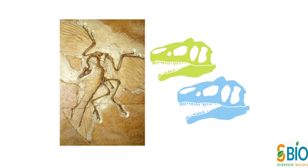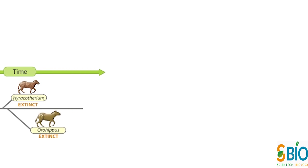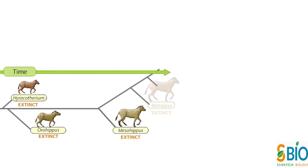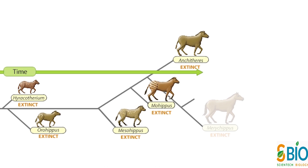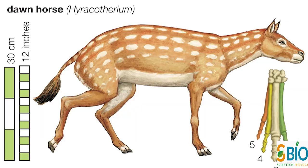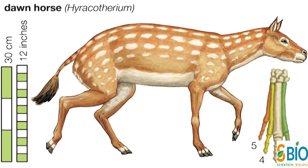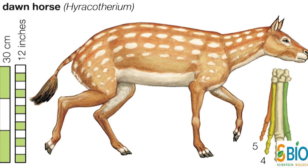Fossils से हम यह जान सकते हैं कि आज से लाखों साल पहले Organisms कैसे दिखते थे। Horse की Evolutionary History, Fossils Record को समझने का सबसे Best Example है। Horse के Evolutionary Tree में बहुत सारी Branches थीं, लेकिन आज Horse की केवल एक ही Species exist करती है। Modern Horse का Evolution लगभग 56 Million Years पहले North America में Eocene Epoch में शुरू हुआ था।